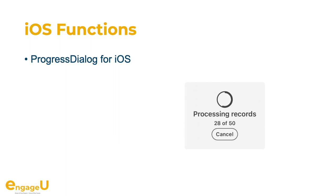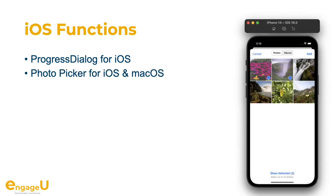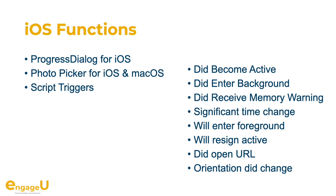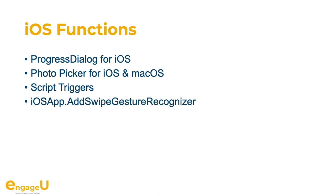We got enhancements for iOS. If you run your own iOS app, you may want to show your progress from time to time, so in a script you can use our progress dialogue to show how things are going. We got photo picker functions for iOS and macOS so you can pick pictures from the user's photo library through a dialogue without additional privacy warnings — the user selects pictures and you only get what was selected. We also got additional script triggers, like if your app goes to the background or comes back to the foreground, or the orientation changes, so you can directly react to these events. We also have a swipe gesture recognizer so you can have special actions happen if the user swipes up, down, left, or right — for example, to switch a layout.